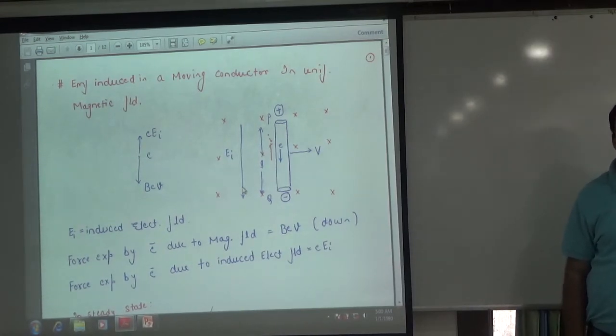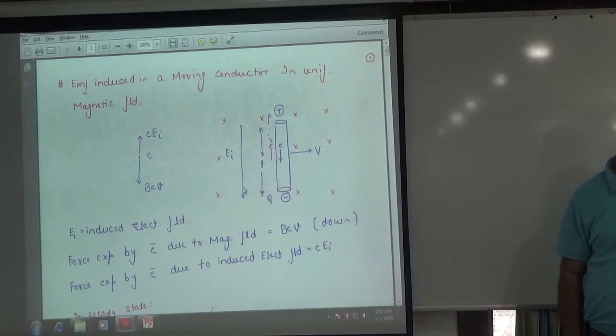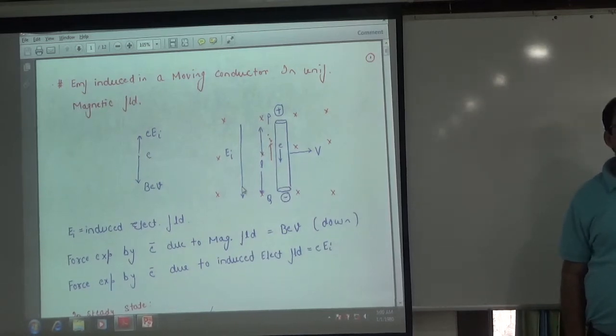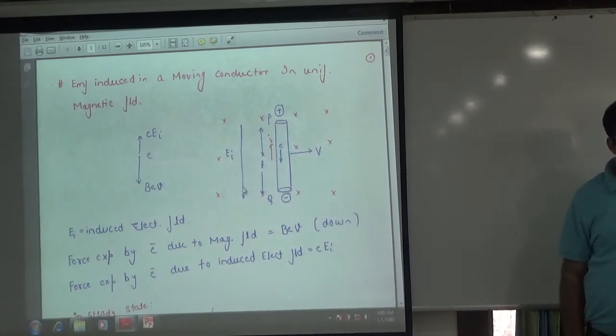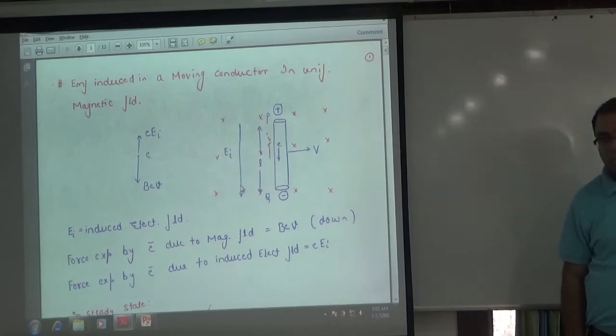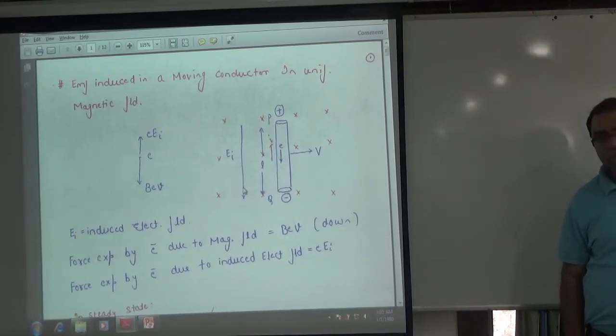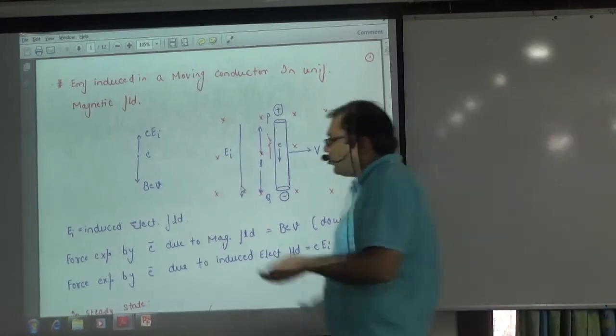We will use the concept from the third unit of magnetism and magnetic effect of current. We will not do anything about this chapter. Then we will do method number two.